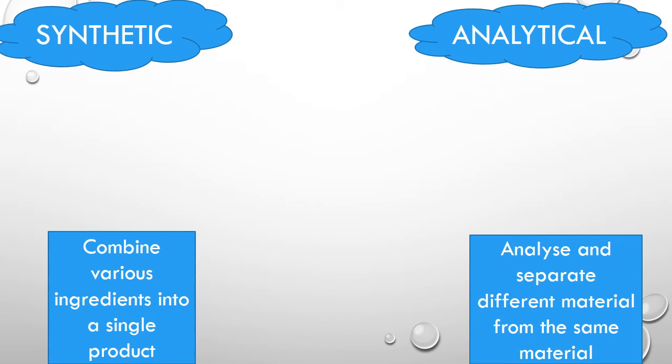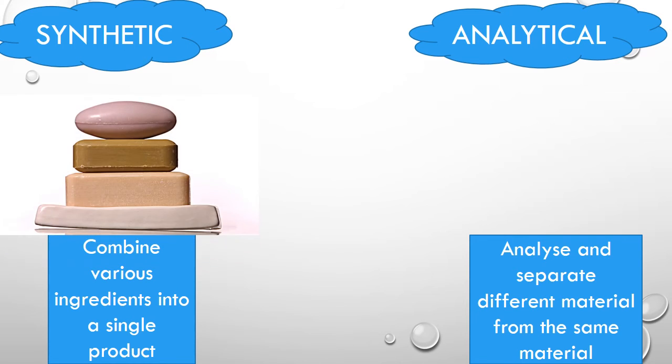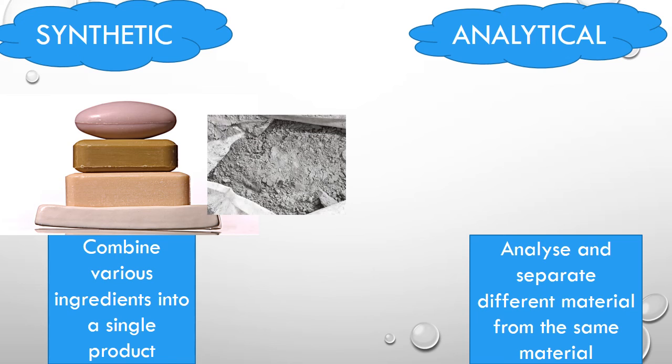In synthetic, you can take an example of soap. To make soap, you need different chemicals, water, and oil. So what are you doing? You combine different raw materials and convert them into one finished product. You can take an example of cement. While preparing cement, we require sand, clay, and limestone. So what do we do? We are mixing two or more different raw materials into one product.